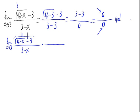That is, the square root of 12 minus x plus 3 times the numerator and times the denominator.